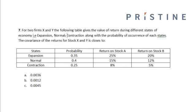For two firms X and Y, the following table gives the value of the returns during different states of economy: expansion, normal, and contraction, along with the probability of occurrence of each state. The covariance of the returns for stock X and Y is closest to...